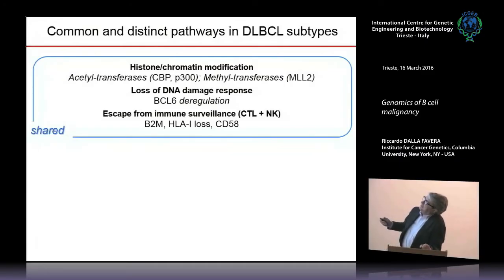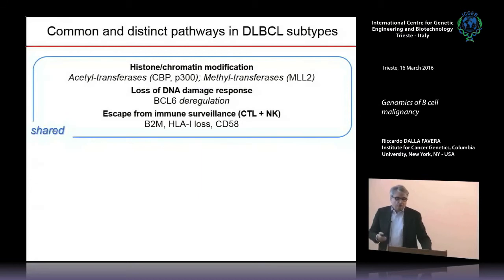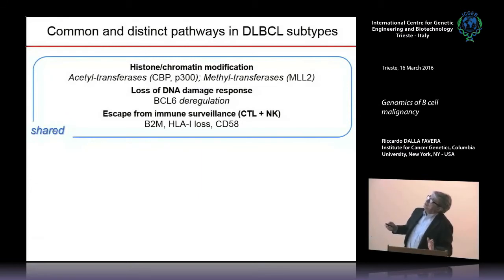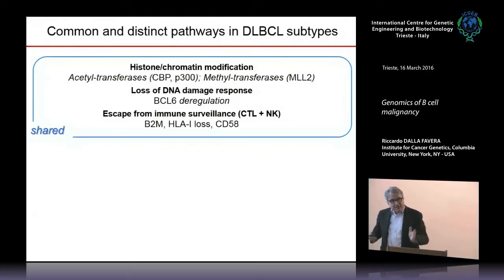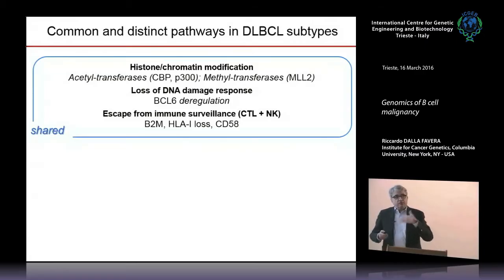The important thing about these chromatin modifier genes — and I have no time to cover the full story — is that they seem to be very early alterations in the cascade of events that leads to tumor, not only in lymphoma but in other tumor types as well. It seems that loss of dosage deranges transcriptional control in a way that is permissive to other alterations that follow. The second very important alteration, by different mechanisms, is deregulation of BCL-6. BCL-6 is the gene I discussed at the beginning that needs to be shut off, and there are multiple mechanisms that prevent its shutoff, delay it, or deregulate the gene.